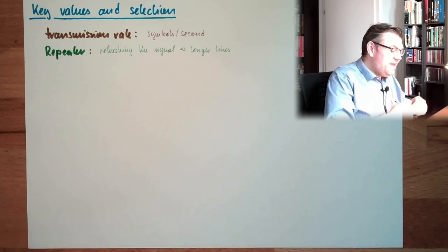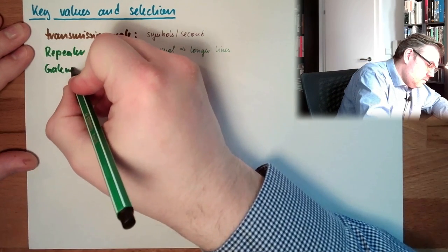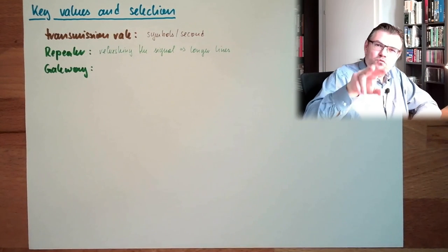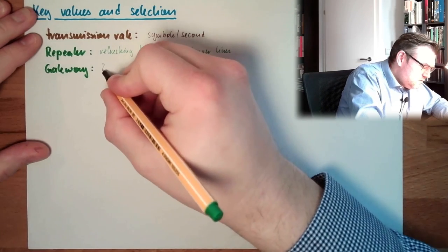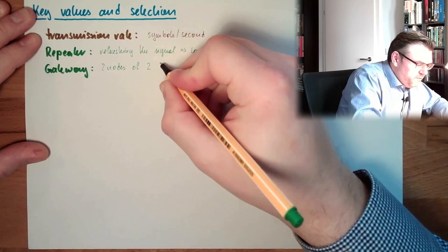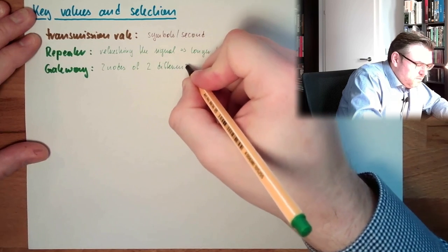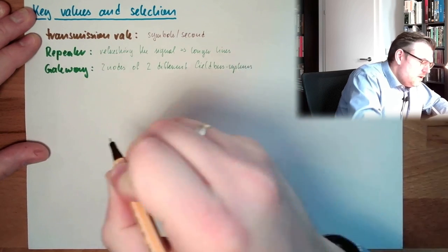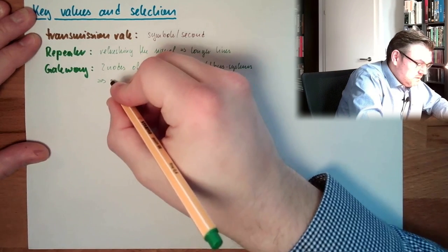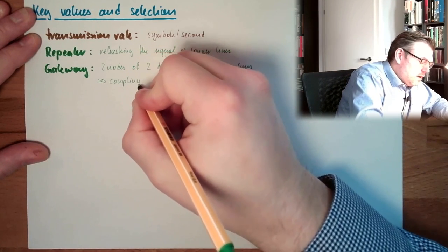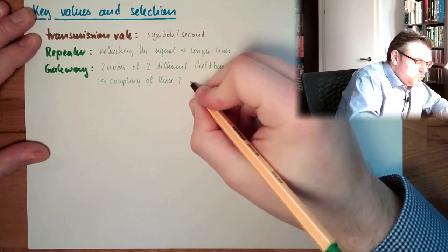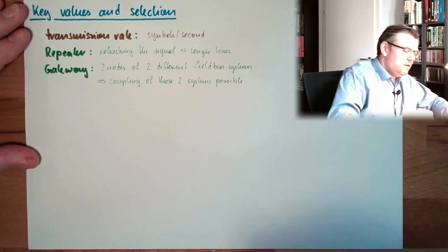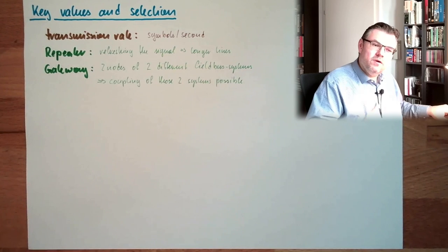On the other hand, we have a Gateway. What is a Gateway? A Gateway has two nodes inside of two different systems. So two nodes of two different fieldbus systems. So it can couple two different systems. Coupling of those two systems possible. This is a good name for this, because actually it's a Gateway to another fieldbus system.